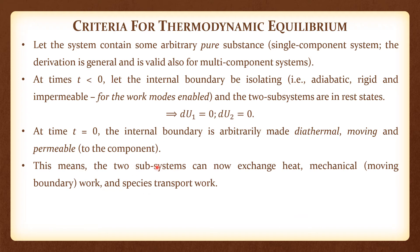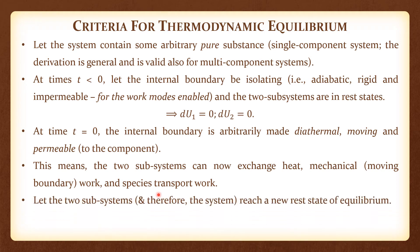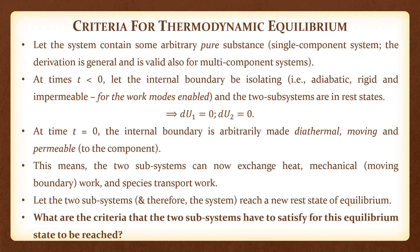This means the two subsystems can now exchange heat, mechanical moving-boundary work, and species via permeable-boundary work. The two subsystems, and therefore the overall system, reach a new rest state of equilibrium. Over a period of time, a new joint rest state for the two subsystems is established. What are the criteria the two subsystems must satisfy for this equilibrium state to be reached? This is the question we will answer in the rest of the lecture.